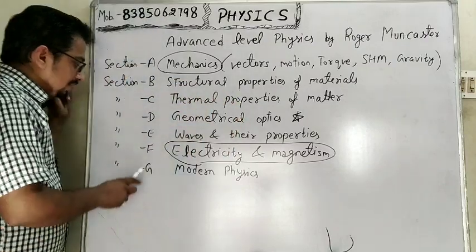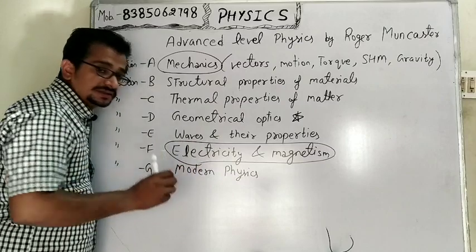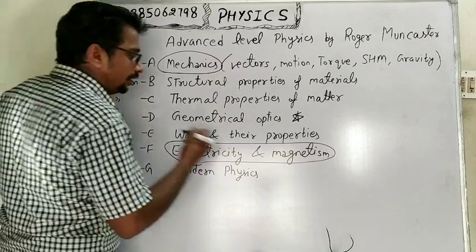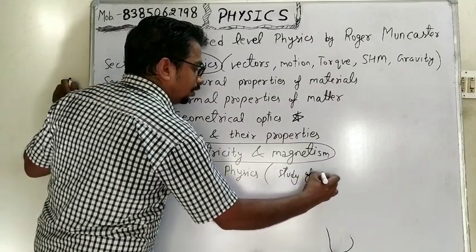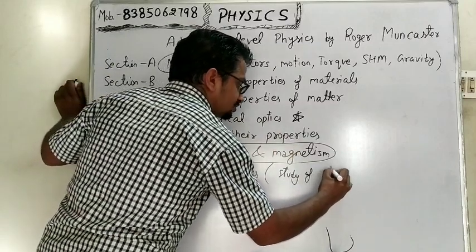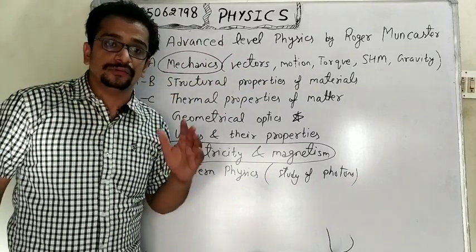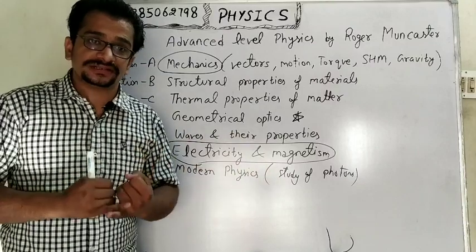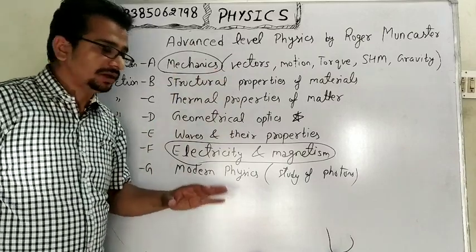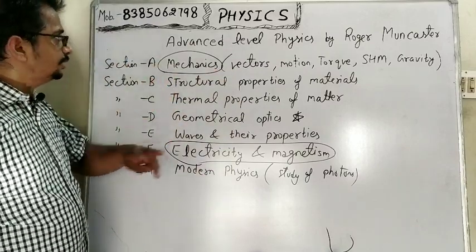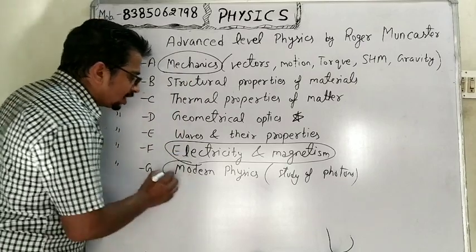At last we have modern physics, which is a branch of physics that deals with the study of photons. In this field we will study the photoelectric effect by Einstein, atomic physics, and nuclear physics. All sections are important, but three are most important for competitive exams: mechanics, electricity, and modern physics.